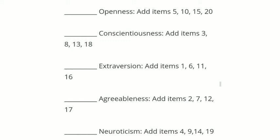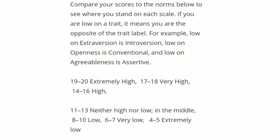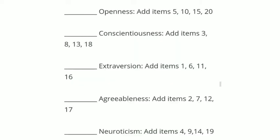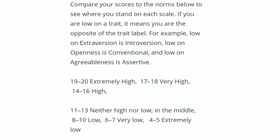It is very important — add only the scores after subtracting from 6, not the earlier original ones. With this you get the score for all five factors separately. Once this is done, use the scale to understand where you stand on each factor.